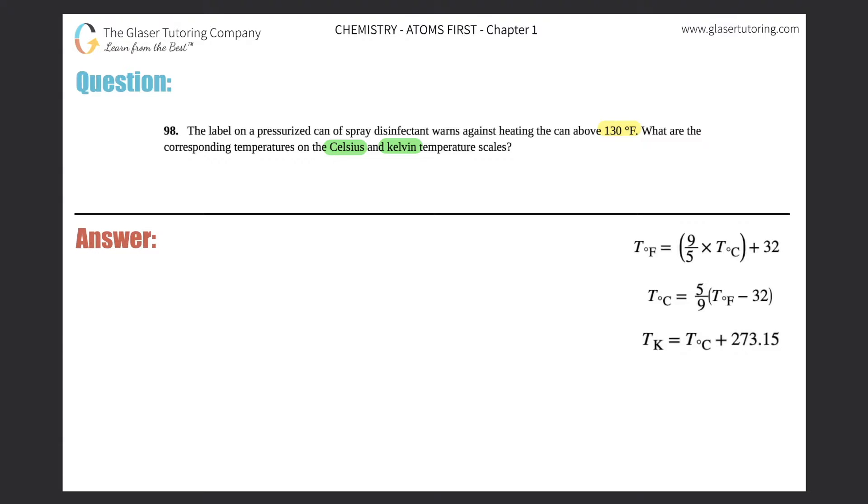You should know by now that the roadmap for temperature conversions is Fahrenheit converts to Celsius, which then converts to Kelvin. So Celsius is always the bridge between Fahrenheit and Kelvin.